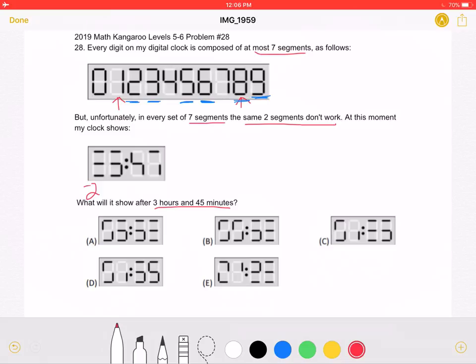Knowing that this number is 2, we can identify which two segments don't work in each number, as these segments right here. And we can fill them in on all the other numbers.